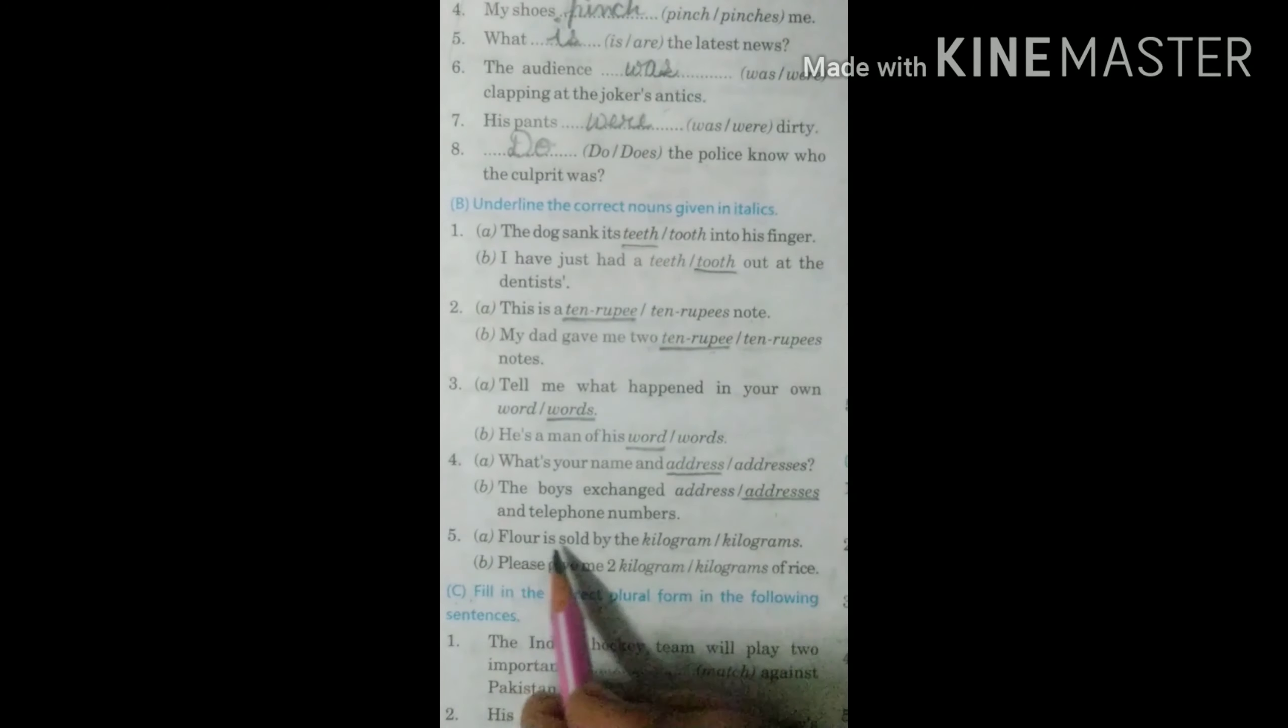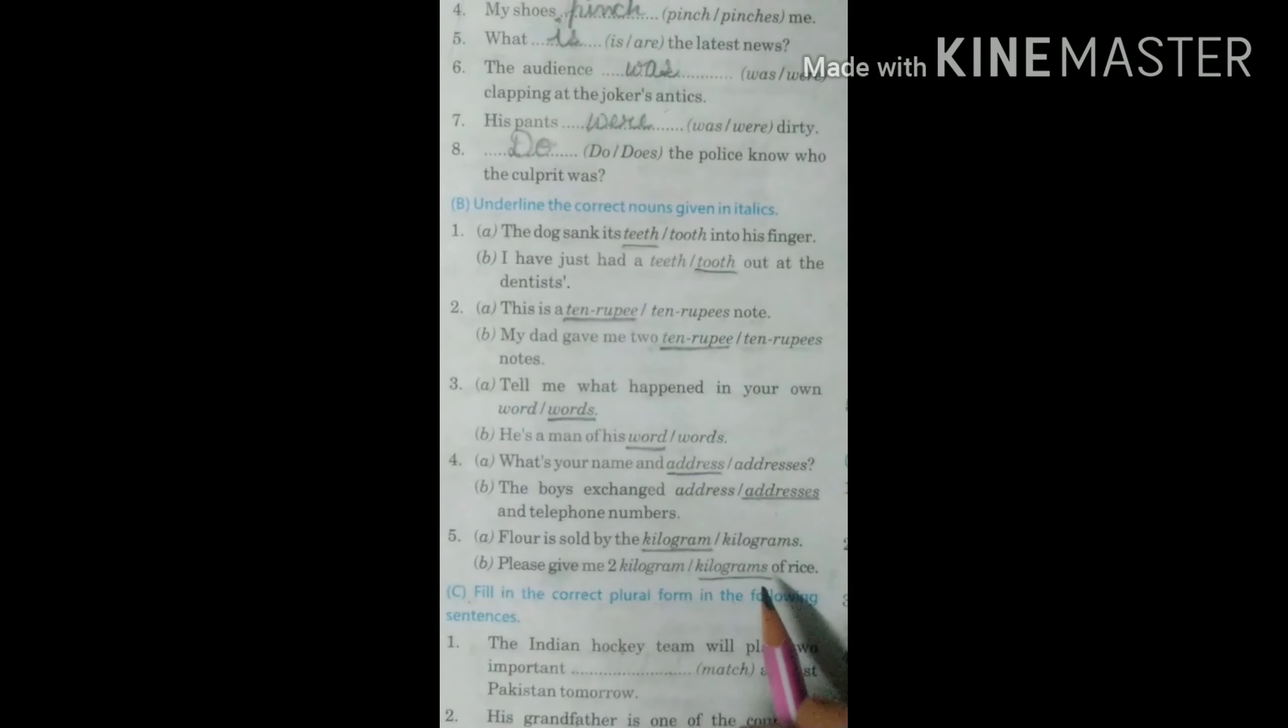Fifth is flour is sold by the dash. Kilogram. Please give me 2 kilograms of rice.